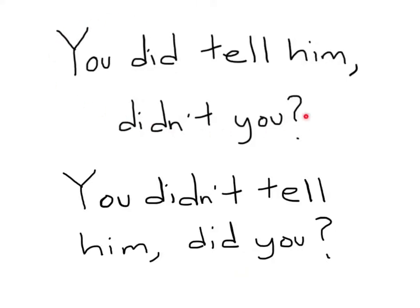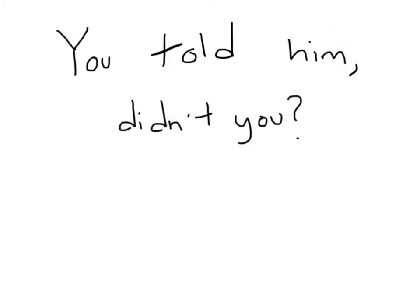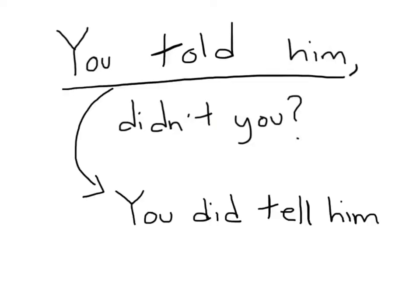Now, let's take this statement, remove the auxiliary verb and see whether we can still form a tag question with it. As you can see, there is no auxiliary verb in the statement, but the question tag still uses 'didn't.' Well, think of it this way — this is basically the same thing as 'you did tell him,' so the auxiliary verb is understood even though it is not spoken. This understanding is applied to many such tag questions.